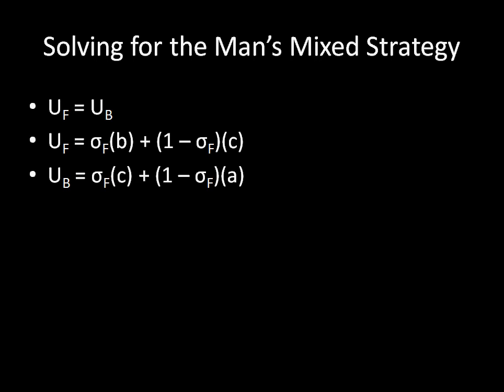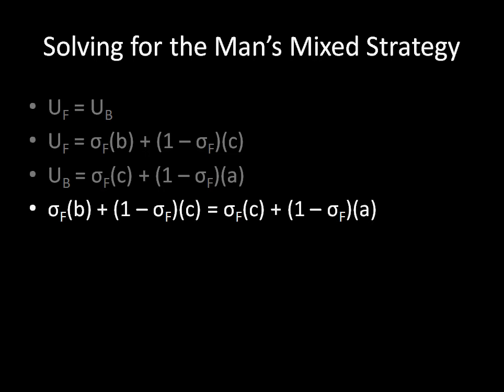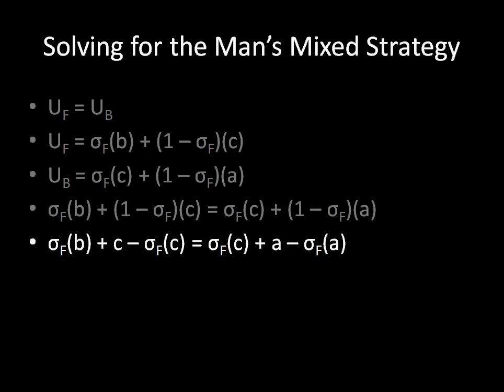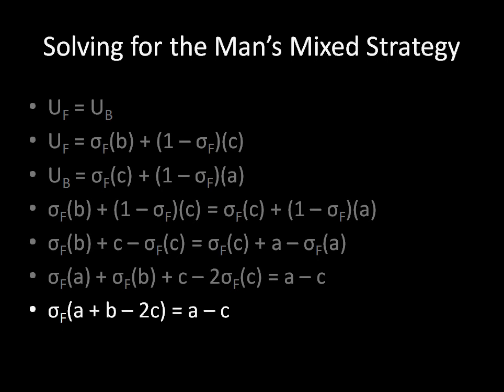And we take those two equations and set them equal to each other and solve for sigma. So here are those two equations, and you can see now that I've set them equal to each other. Now we're going to begin solving for sigma. I begin by distributing the c and the a. Then we group the figures with sigma on one side and the rest with the other. Again, this is standard when solving for unknowns. Then we pull out the sigma and divide by a plus b minus 2c. And that's our answer: a minus c over a plus b minus 2c.